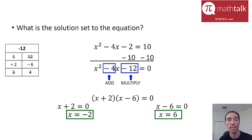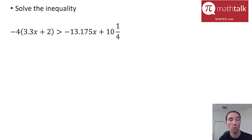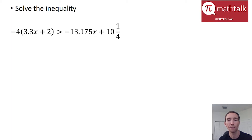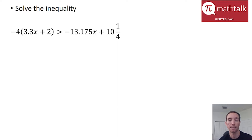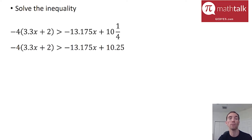Alright, let's take a look at some more examples. Solve the inequality — pretty straightforward directions, but a pretty ugly looking inequality. There are decimals, parentheses, and fractions, so let's take this one step at a time. I want to turn that fraction to a decimal since everything else is given as a decimal. A quarter is represented as 0.25, so I'll rewrite it that way.